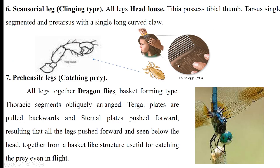Ischensorial legs, also known as clinging type legs, are present in the head louse. All legs of the head louse are of this type. The tibia possesses a tibial thumb, the tarsus is single-segmented, and ends in a pre-tarsus with a single long curved claw. This structure helps the head louse cling to hair.